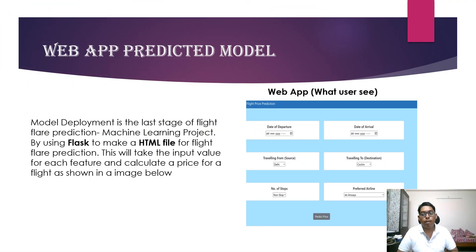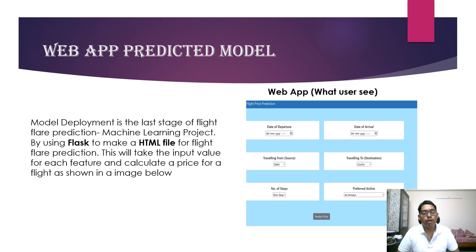Model deployment is the last stage of the flight fare prediction machine learning project, using Flask to create an HTML file for flight fare prediction. This takes an input value for each feature and calculates a price for a flight, as shown in the image below.